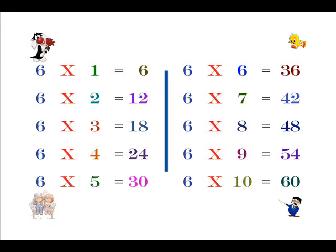Six ones are six. Six twos are twelve. Six threes are eighteen. Six fours are twenty-four. Six fives are thirty.